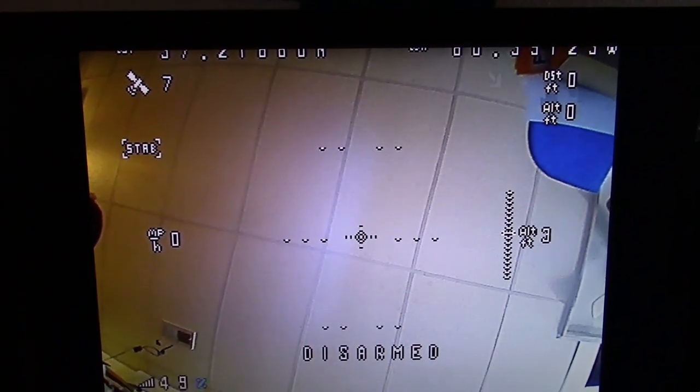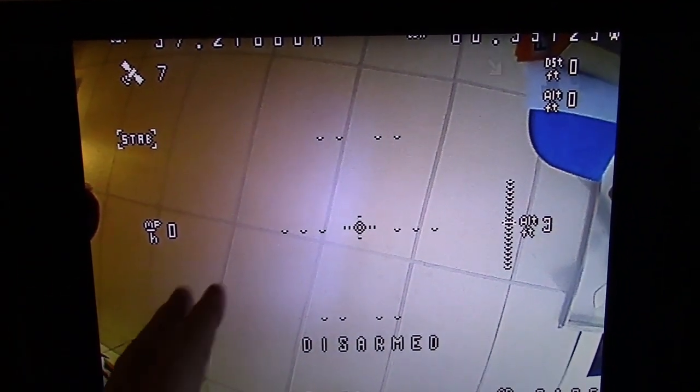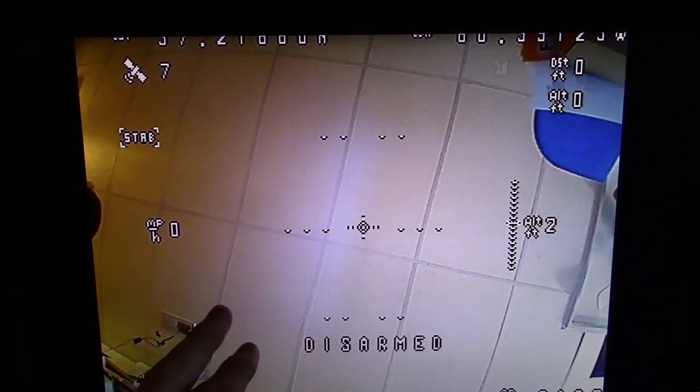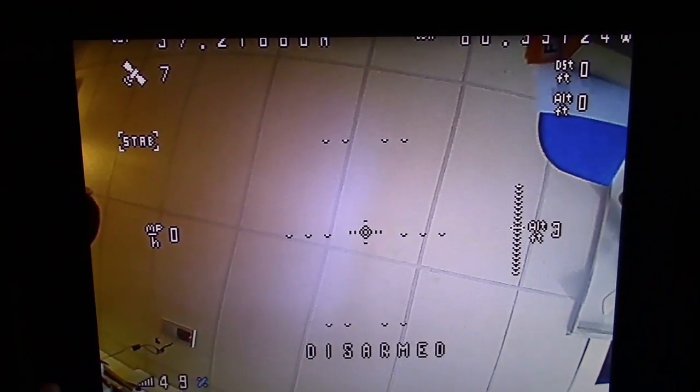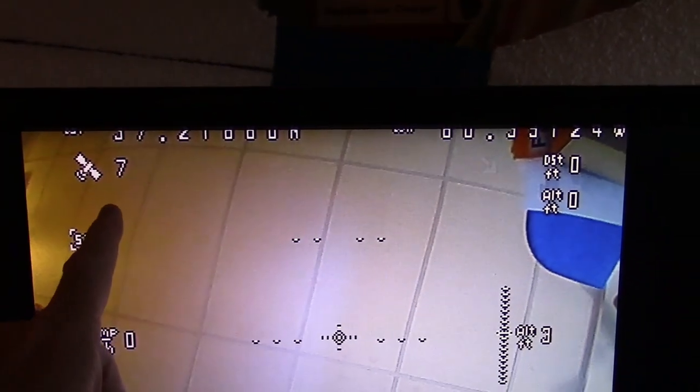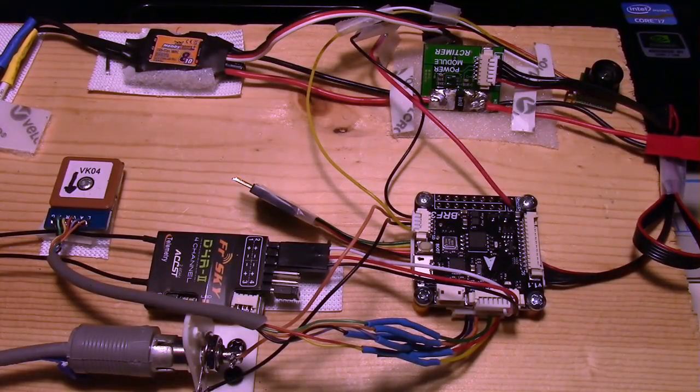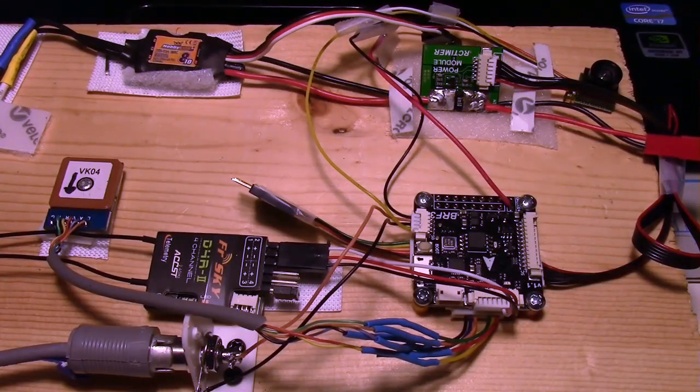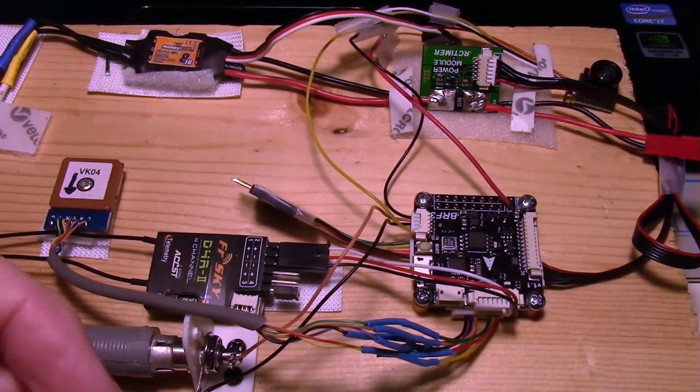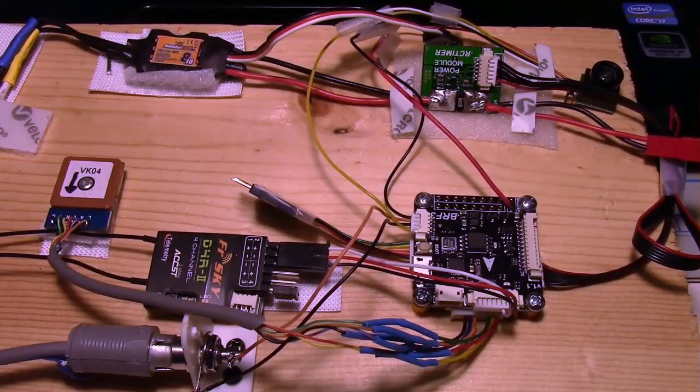But we have to configure the flight controller with CleanFlight. I'll show you how to do that. And we have to configure the OSD to show the satellites. And, of course, the OSD is part of the B-Rotor. So, let's configure the B-Rotor OSD first. And that's a MiniWii OSD. And in order to do this, this is very important.